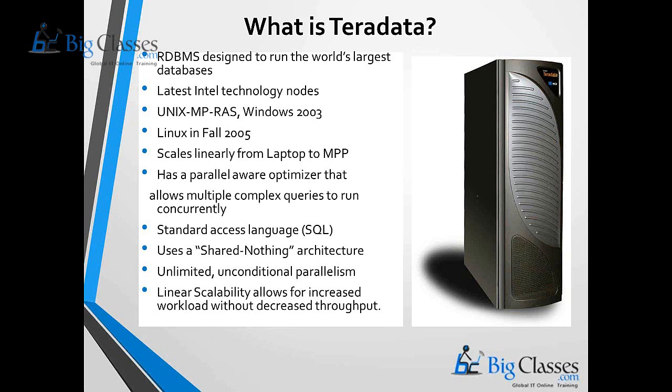The first thing is the share nothing architecture of Teradata. I will talk about what share nothing architecture means in the basic architecture part. Share nothing architecture is one of the biggest advantages — processes will not be shared across during data transfer between different AMPs. That is why data retrieval will be faster. Each AMP — Access Module Processing Unit — is a processing unit of Teradata, and there is no sharing between different AMPs.